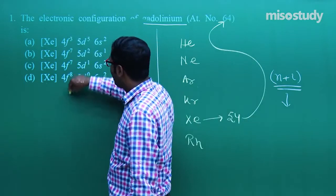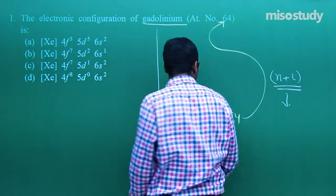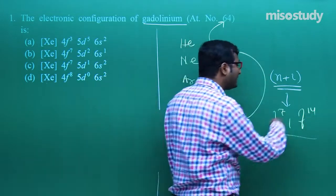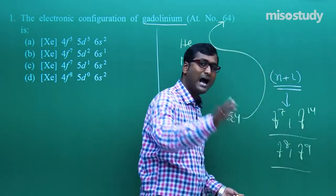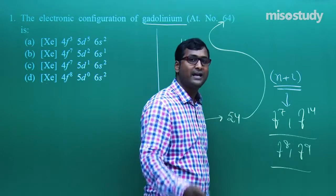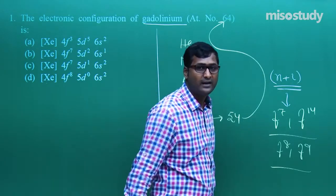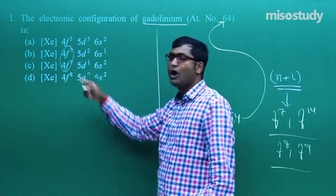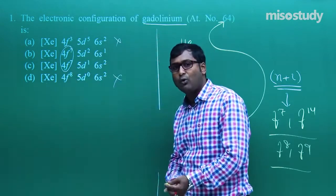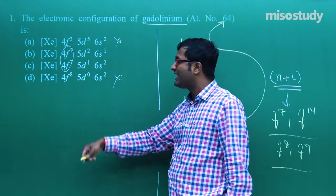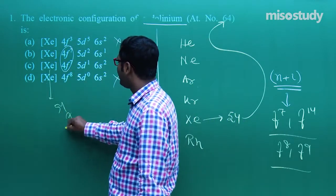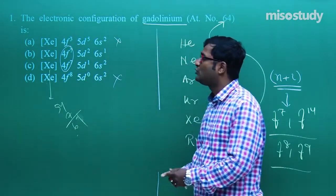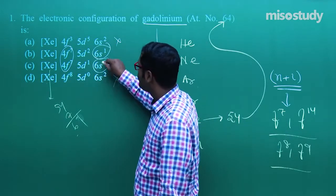Now, f⁷ and f¹⁴ configurations are more stable than f⁸ or f⁹ because half-filled and fully-filled electronic configurations give stable arrangements. So the electronic configuration will involve 4f⁷. We can neglect options A and D. Counting electrons: 54 (Xe) + 7 (from 4f⁷) = 61, plus 5d, plus 6s². Note it is 6s², not 6s¹.